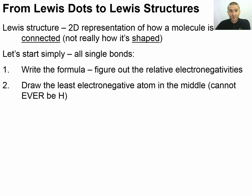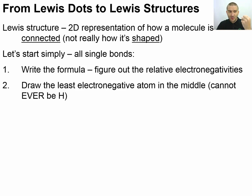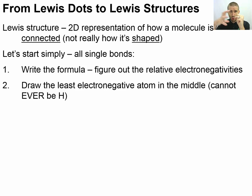The reason the least electronegative atom goes in the center: remember the analogy for money and bonding. It's a bit like a thieving situation where the really electronegative atom steals from the one with poor electronegativity. If you have a victim and four muggers, who's going to be in the middle? Not the muggers — it's going to be the victim. Similarly, the atom that can't take electrons gets swarmed by the atoms that can, so your least electronegative atom goes in the middle.